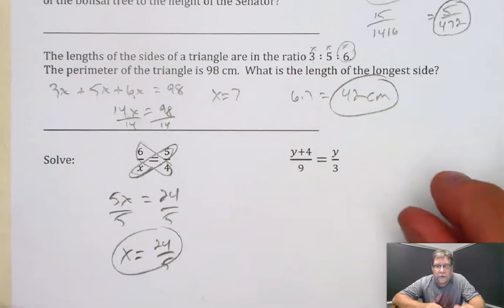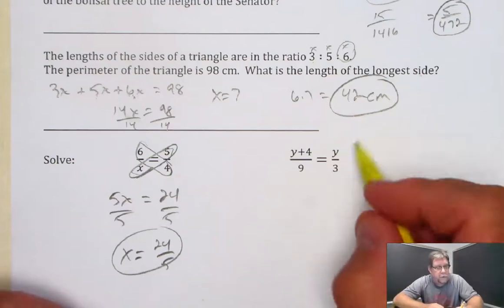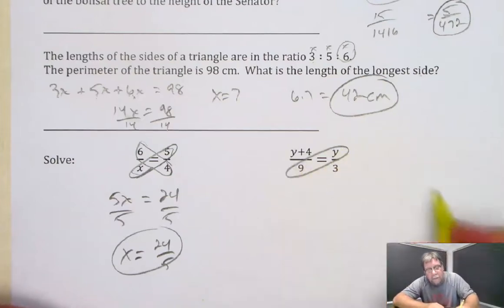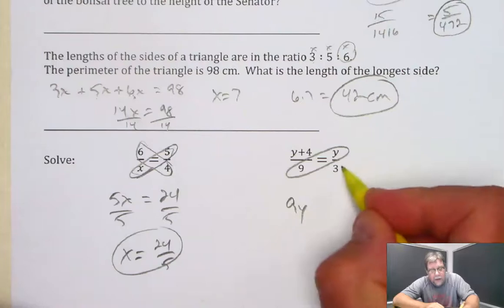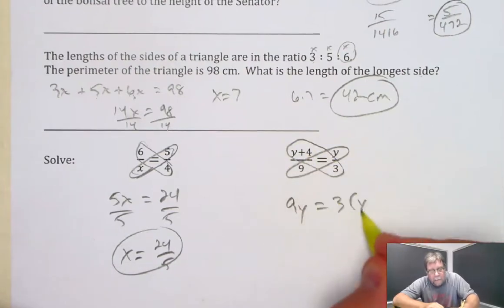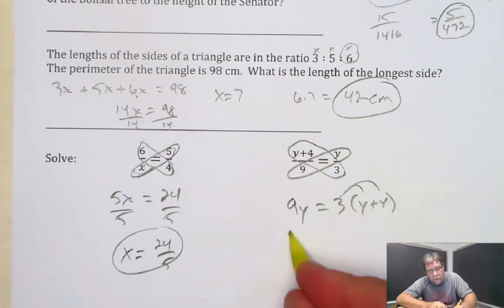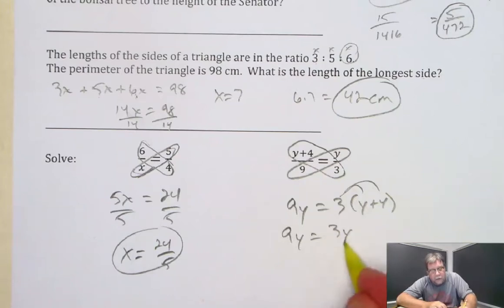This one we're going to write this way. We're going to take 9 times y, which is 9y, and 3 times y plus 4. Notice I put them in parentheses, and then I have to distribute the 3. So 9y equals 3y plus 12.